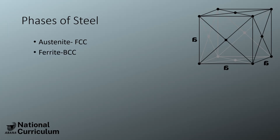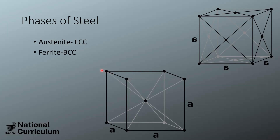The other phase is ferrite, which is BCC — body-centered cubic — with an iron atom at each corner and one atom of iron in the center of the cubic structure. Ferrite is not as densely packed, so it doesn't accommodate stress and deformation as easily as austenite. That's part of the reason it's easier to forge at higher temperatures versus cold working at low temperatures. The third phase we've been talking about is cementite, which is orthorhombic. I don't want to introduce more crystal structures than necessary, so we'll just note that and continue.